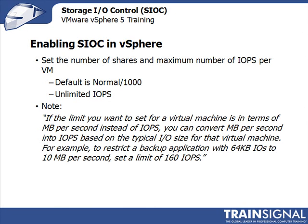There's an important note from VMware's official documentation: if the limit you want to set for a virtual machine is in terms of megabytes per second instead of IOPs, you can convert megabytes per second into IOPs based on the typical I/O size. For example, to restrict a backup application with 640 kilobytes of I/O to 10 megabytes per second, you set a limit of 160 IOPs per second. The vSphere client only allows you to specify IOPs per second, so you need this conversion.